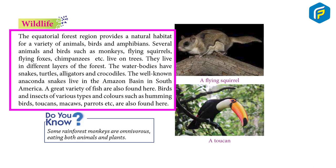The equatorial forest region provides a natural habitat for a variety of animals, birds, and amphibians. Several animals and birds such as monkeys, flying squirrels, flying foxes, and chimpanzees live on trees. They live in different layers of the forest. The water bodies have snakes, turtles, alligators, and crocodiles. The well-known anaconda snakes live in the Amazon basin in South America. A great variety of fish are also found here.